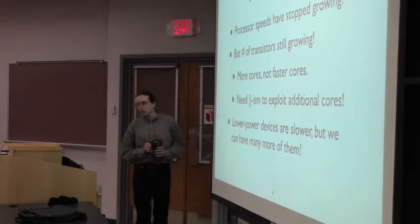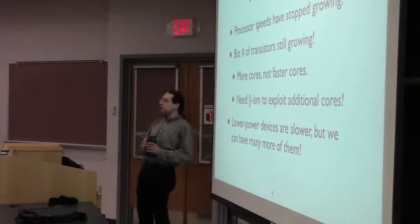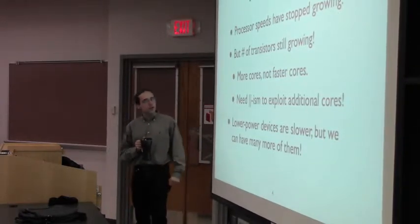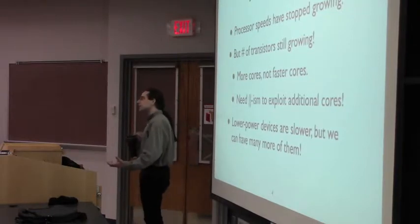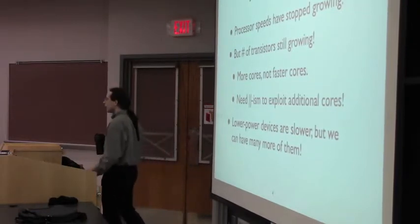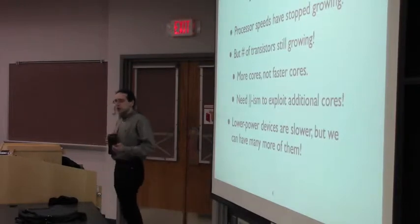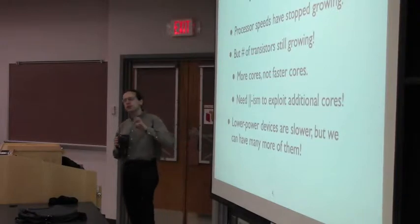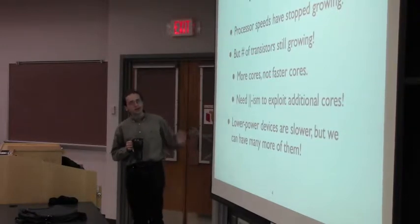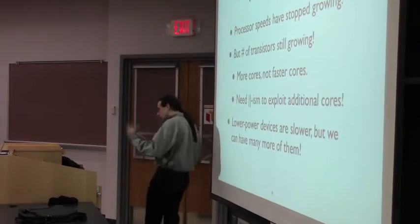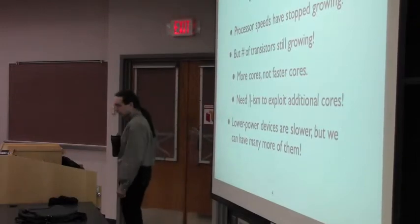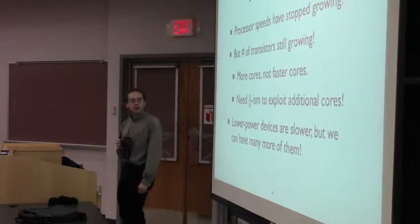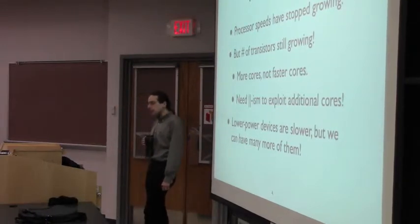So show of hands, who's familiar with Moore's Law. Okay, good. Nearly everyone. So basically Moore's Law traditionally has meant that processor speeds, or technically Moore's Law refers to the number of transistors on a chip. And the number of transistors doubles every 1.4 years. People have previously taken that to mean that the processor speed doubles every one and a half years. But that's basically due to various physical limitations. That's not happening anymore.